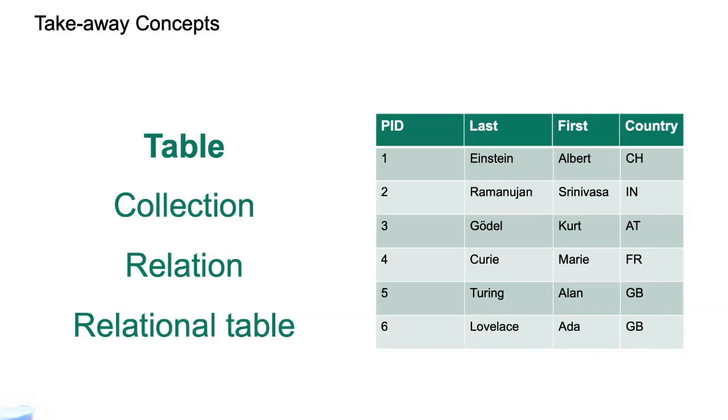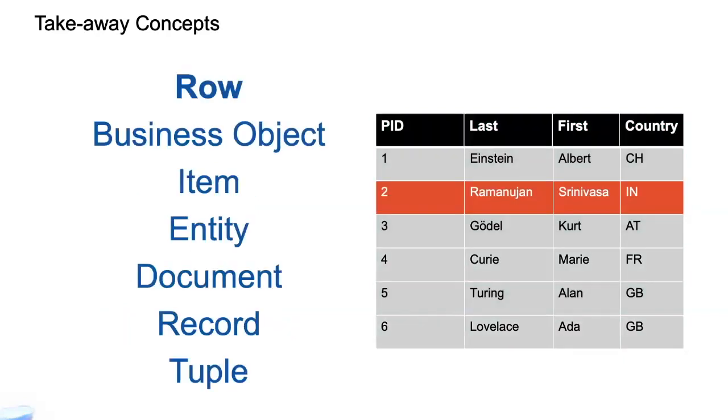We take one row here. This is also called a record or an entity or a tuple. That's a mathematical word for that. A document in some technologies. They call it a document. An item. And this is my absolute favorite. This is typically people who have an MBA. They call that a business object. It's every other business objects. So a business object, if you ever hear this interacting with business people, it basically means a row in a relational table, right? It's a record. In that case, it's a person.